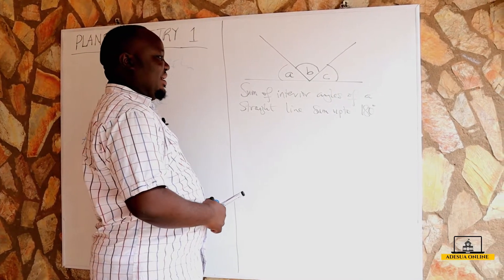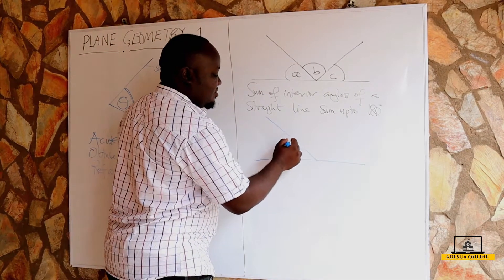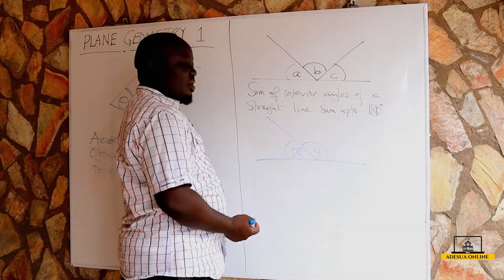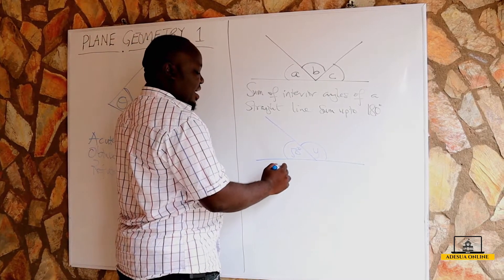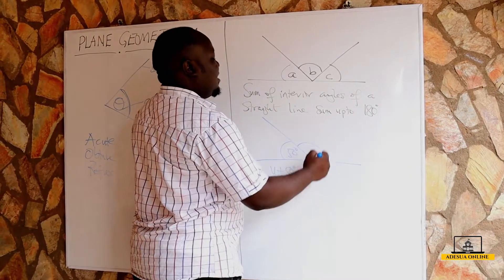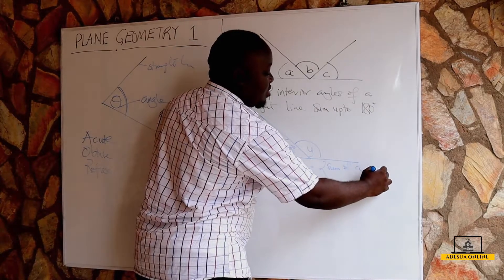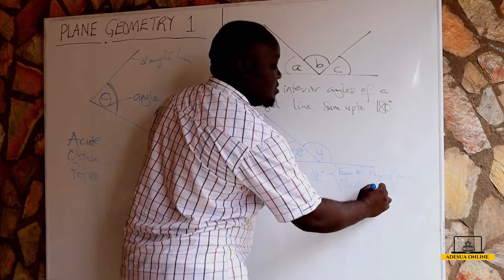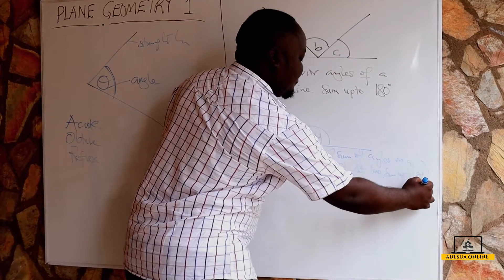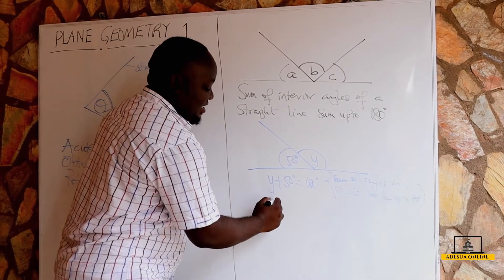So if I have a straight line and I name one angle 50 degrees and the other angle y, and I ask you to solve for y, you can say: y plus 50 is equal to 180. The reason is: the sum of angles on a straight line sums up to 180 degrees.